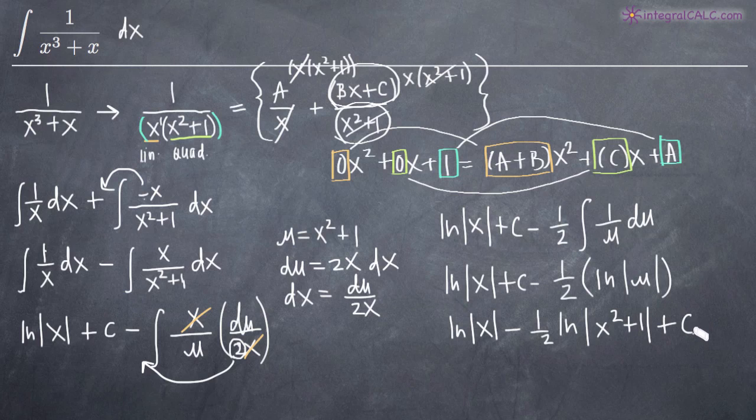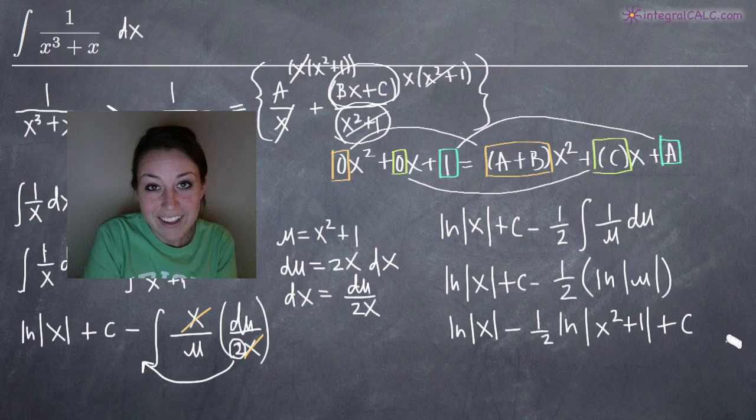Our final answer is the natural log of the absolute value of x minus 1 half times the natural log of the absolute value of x squared plus 1, plus C. That's it — I hope this video helped, and I'll see you in the next one.